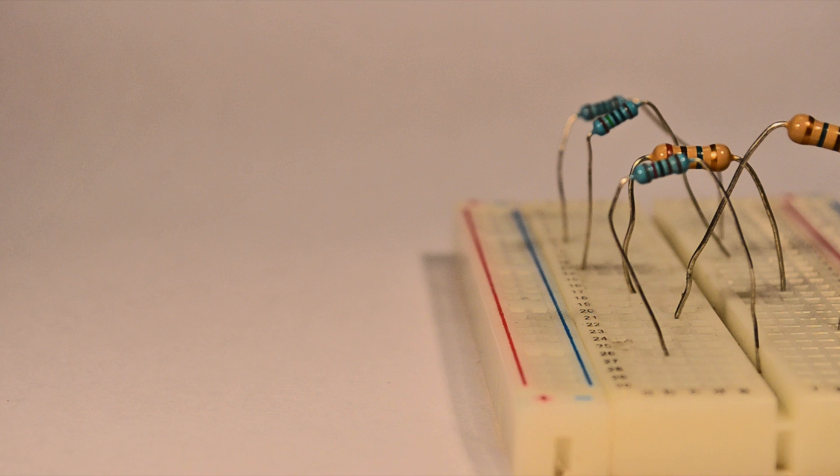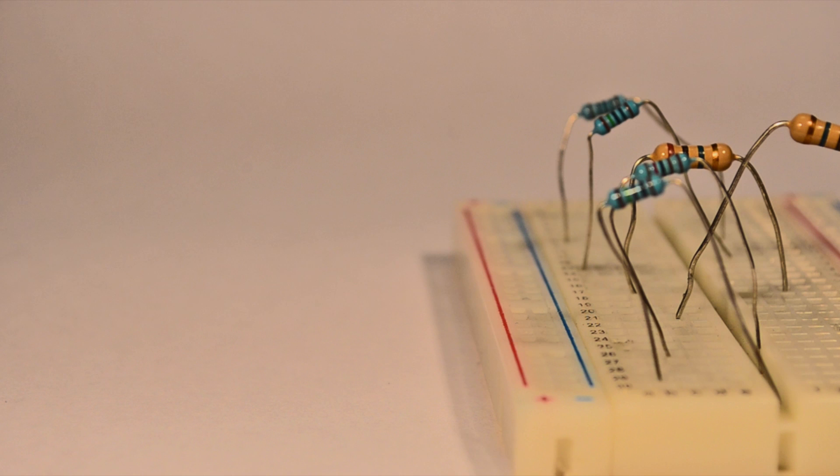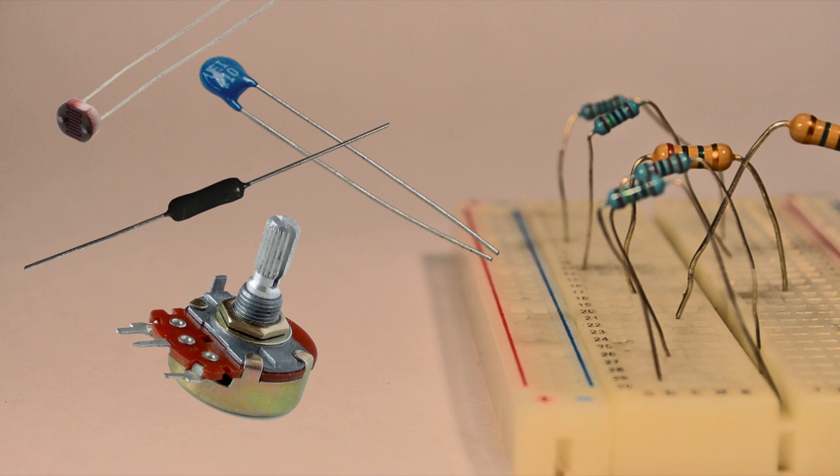you'll see a number of similar components with resistance values that vary depending on all kinds of elements, like light, heat, magnetic fluctuation, or mechanical movement.